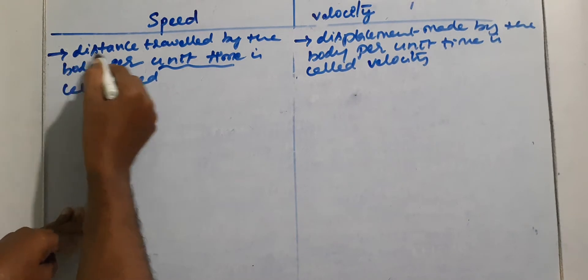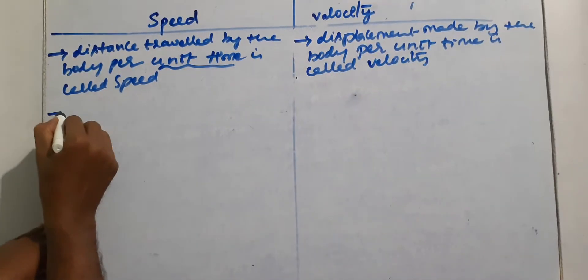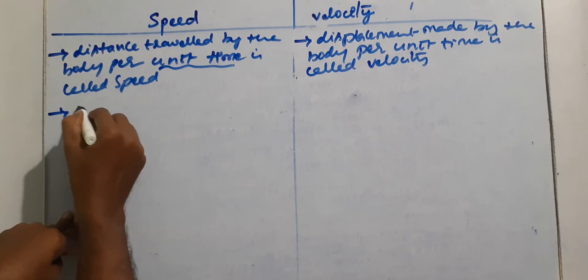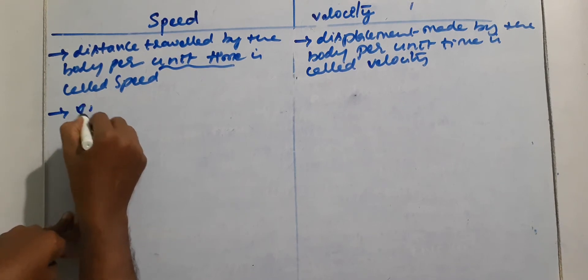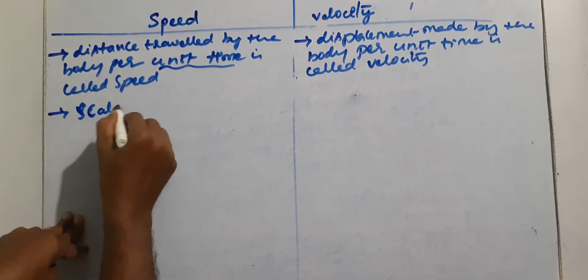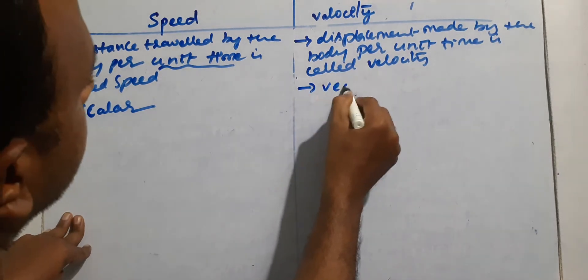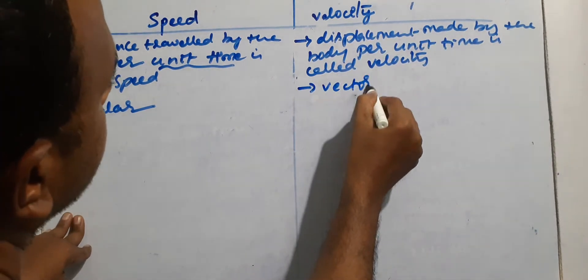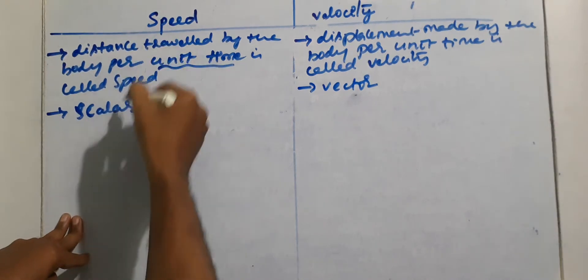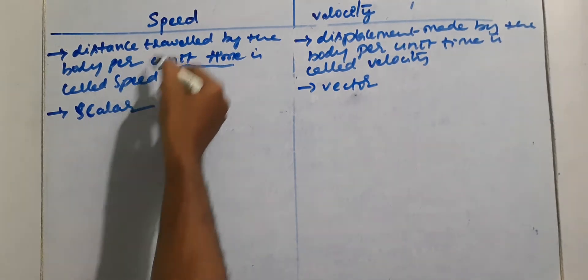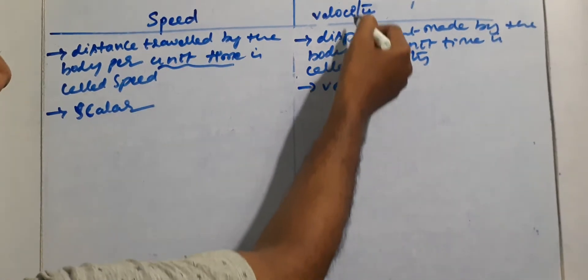Since distance is a scalar quantity and displacement is a vector quantity, speed is a scalar quantity and velocity is a vector quantity. Distance is scalar, so speed is scalar. Displacement is vector, so velocity is vector.